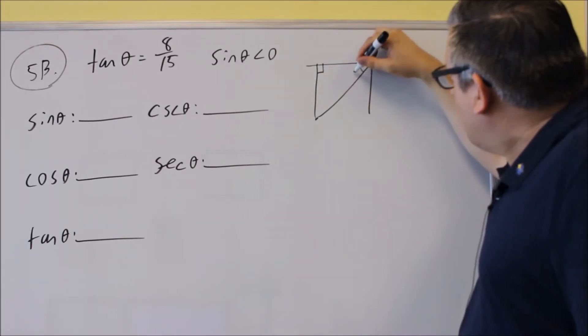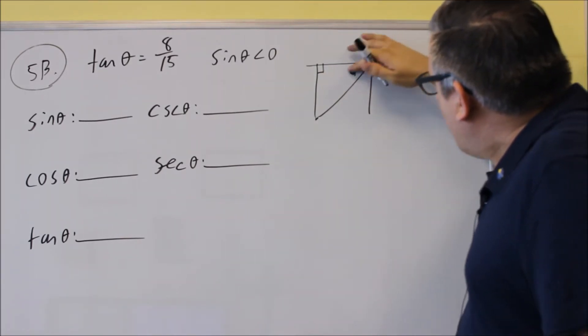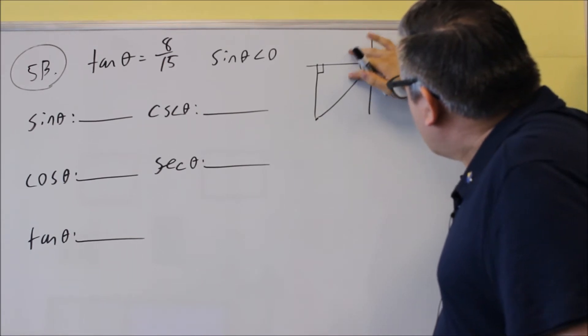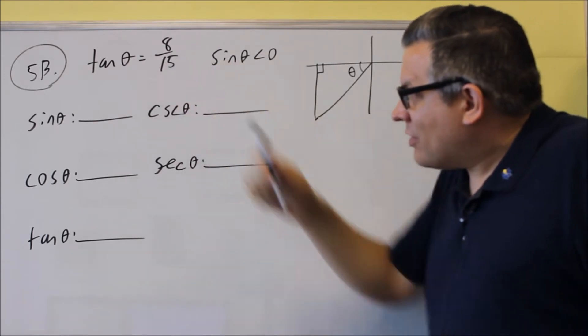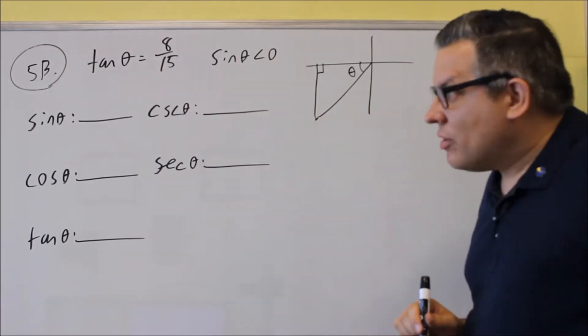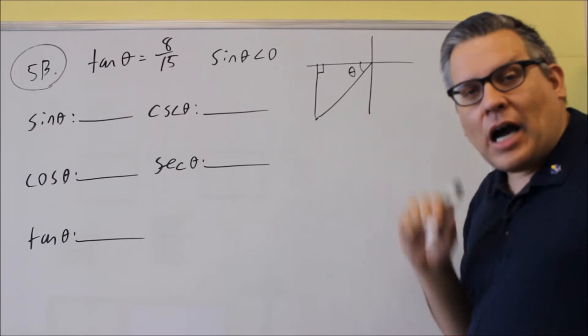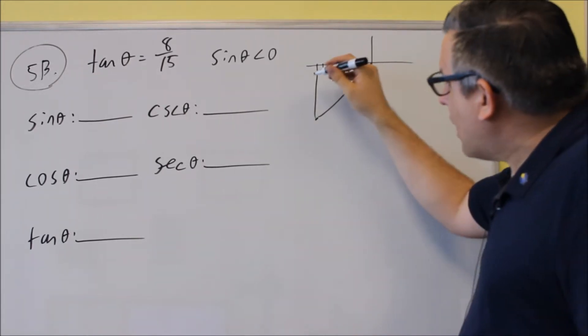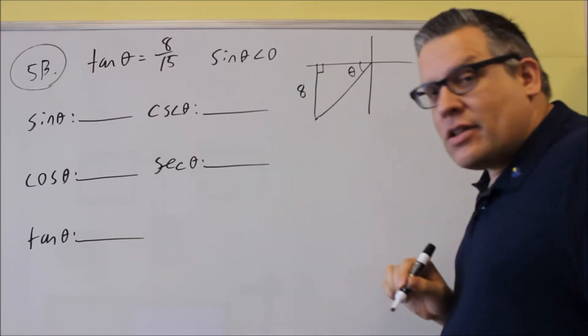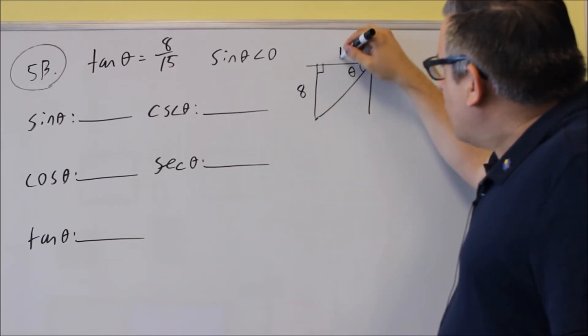Okay, now theta is going to be here. Make that look a little bit clearer. And then we have the tangent is 8/15. So tangent definition is opposite over adjacent. So opposite this angle where the theta is, opposite would be 8, and adjacent would be 15.